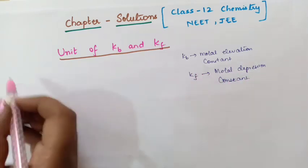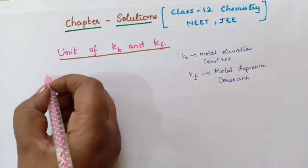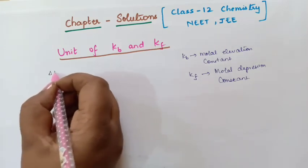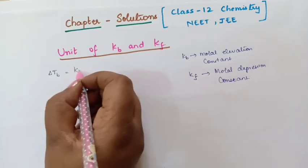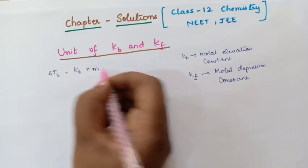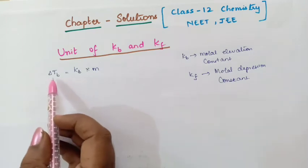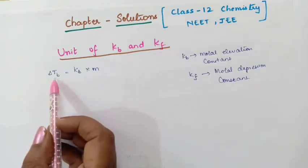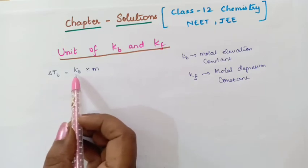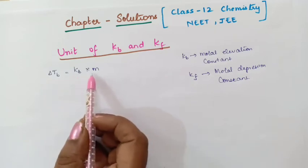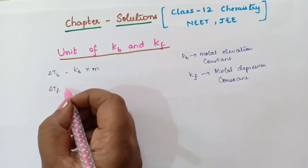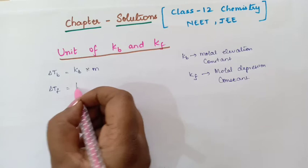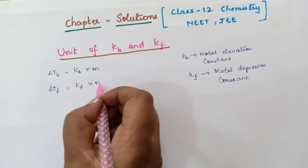So let us write the formula for this. That is delta Tb is equal to Kb into molality. So here delta Tb is elevation in boiling point. Elevation in boiling point is equal to molar elevation constant into molality. And delta Tf is depression in freezing point and this is equal to Kf into molality.